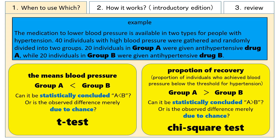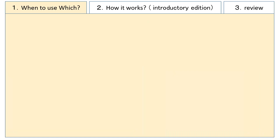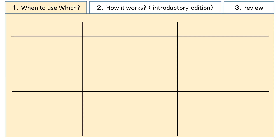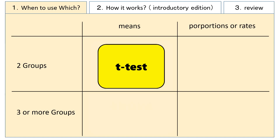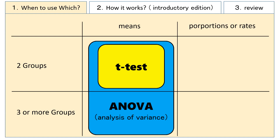So far we have only looked at comparisons between two groups. Now let's consider which test to use when comparing three or more groups. Please take a look at this table. The top row shows comparisons between two groups, while the bottom row shows comparisons between three or more groups. The left side is for comparing mean values, and the right side is for comparing proportions or rates. The t-test goes in the two-group mean spot. ANOVA goes in the three-or-more-group mean spot, but ANOVA can also be used for comparing the mean values of two groups. The same results can be obtained regardless of which test is used.